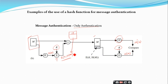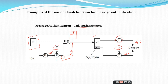The advantage of this approach is it reduces the processing burden for applications that do not require confidentiality. Providing confidentiality to the entire message involves more computational burden on the receiver for decryption. In this case, only the hash code is encrypted, while the entire message is not — significantly reducing the processing overhead.